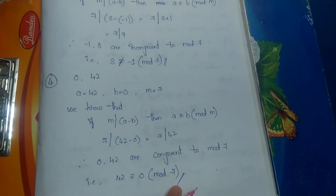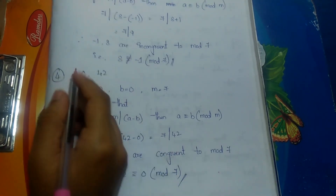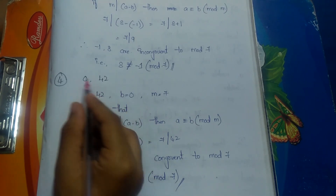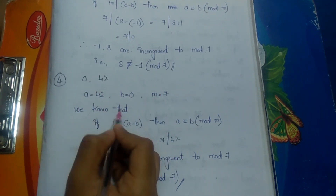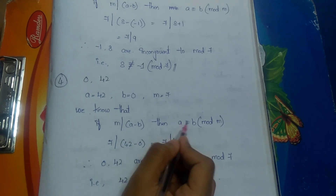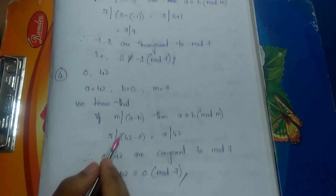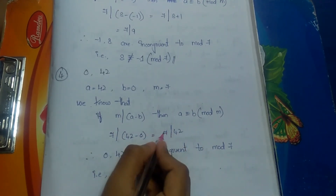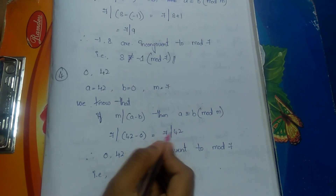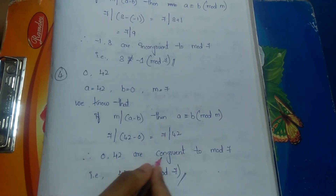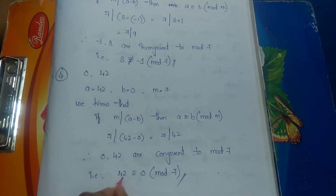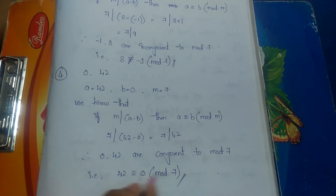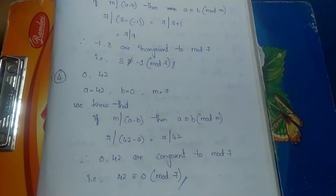Fourth pair: (0, 42). Here a = 42 and b = 0, m = 7. So 7 divides 42 minus 0, which is 7 divides 42. Yes, 7 divides 42, so this is congruent. Therefore the pair (0, 42) is congruent to modulo 7, written as 42 ≡ 0 (mod 7). This is how we solve congruence questions.